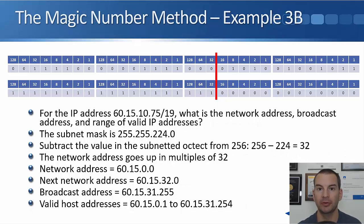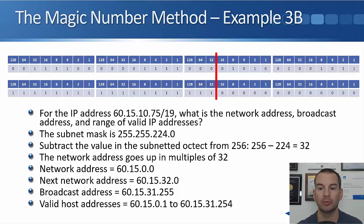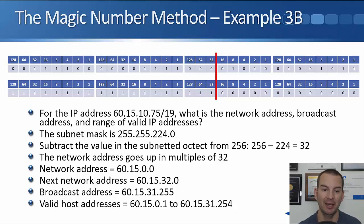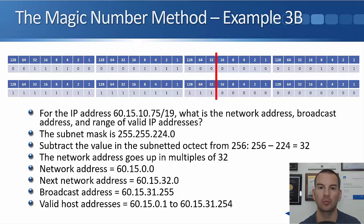We can use the magic number method for that example again. It was a slash 19 — three bits on the third octet, so that is 128, 192, and then 224. We subtract 224 from 256, which gives us 32, so we know the address block is going up in values of 32 on the third octet. So the network address is 60.15.0.0, the broadcast address is 60.15.31.255, and valid hosts are 60.15.0.1 up to 60.15.31.254.